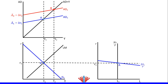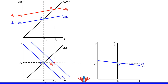Since aggregate demand increased, this will shift the IS curve to the right in the IS-LM model. The IS curve will shift to the right crossing point Y2 and R1. So let's label point Y2 and R1 as B1, then shift the IS curve to the right crossing point B1.